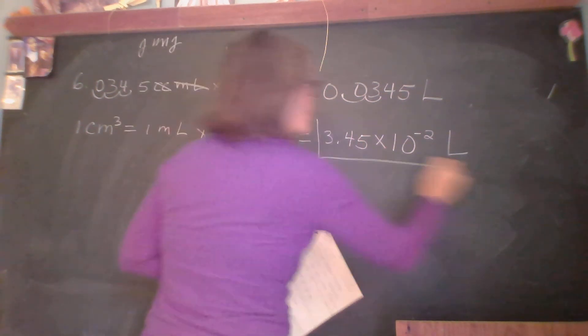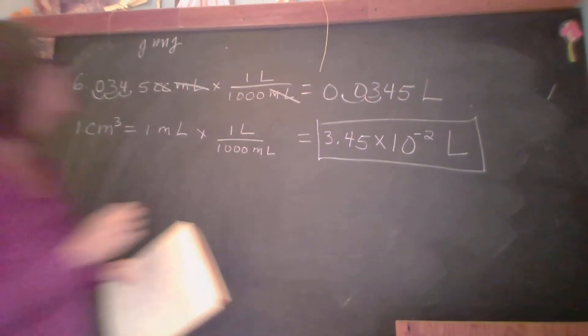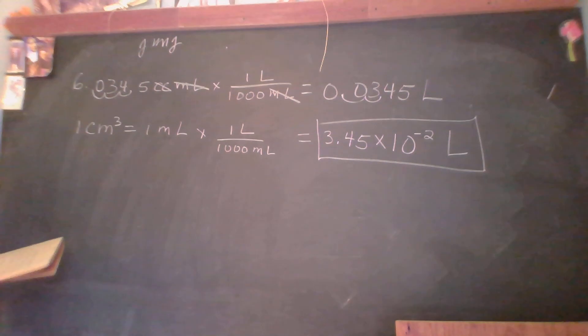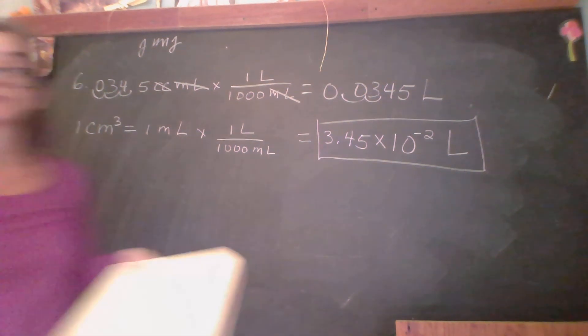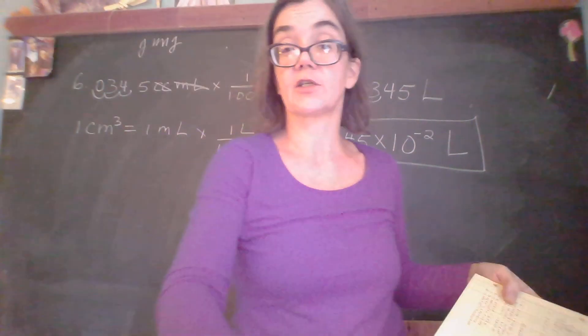So 34.5 cc is equal to 3.45 times 10 to the negative two liters. Okay. Thank you very much, Ninja. Thanks, Ninja.